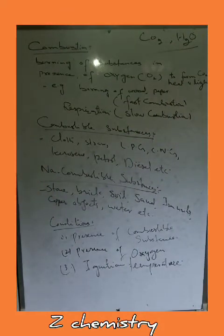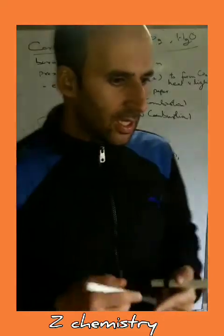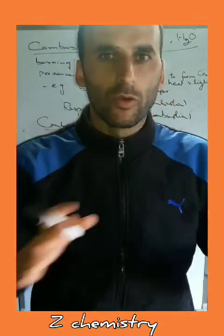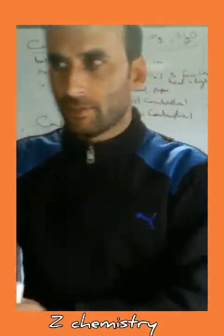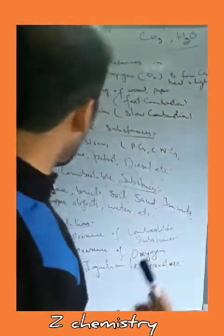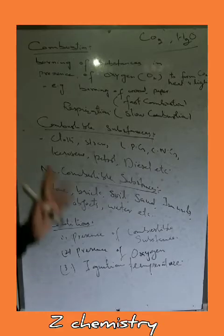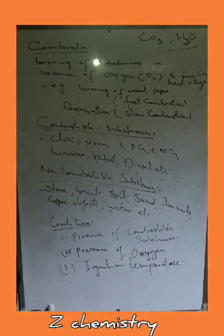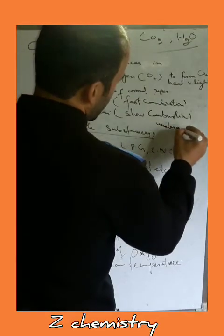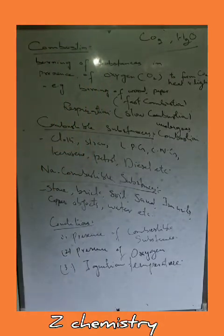On the basis of this process, the substances which surround us have been classified into two types. Some substances are those which undergo combustion — burning in the presence of oxygen — while some substances do not undergo burning in the presence of oxygen. Such substances are called non-combustible substances. Hence, the substances surrounding us are classified into combustible substances as well as non-combustible substances. Combustible substances are those which undergo combustion to form carbon dioxide along with heat and light.